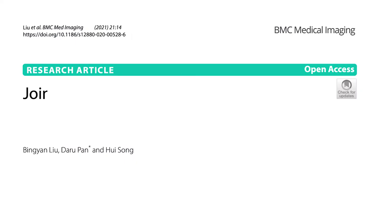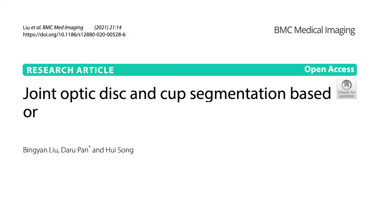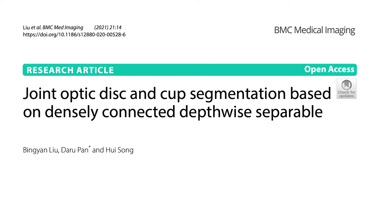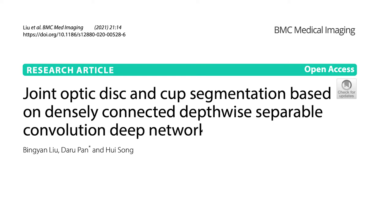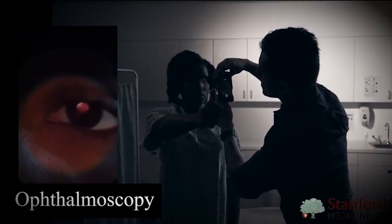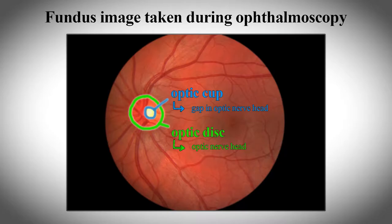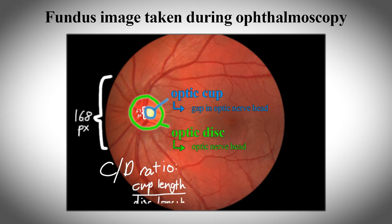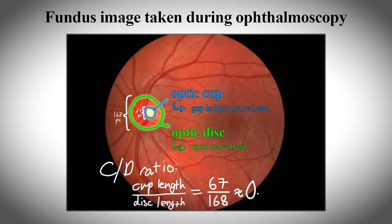The title of this paper is Joint Optic Disc and Cup Segmentation Based on Densely Connected Depthwise Separable Convolution Deep Network. Let's break that down. Remember last time when I talked about ophthalmoscopy and how you can calculate cup-to-disc ratio by measuring the size of an optic cup and optic disc in a fundus image?